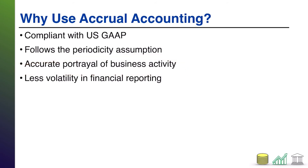Accrual accounting is also a more accurate portrayal of business activity. If you mowed the lawn in period one but don't get paid until period three, it doesn't make sense to say you earned revenue in period three — that's when the cash came in, but that's not when you actually conducted the business activity. So accrual accounting better portrays the actual business activity that takes place. Additionally, there's a lot less volatility. In a cash system, you spend cash for gas at one point, maintenance at another, employees at another, and you don't even know when the customer's going to pay — so cash flows and revenue go up and down constantly. Under accrual accounting, because you match revenues and expenses, they net against each other and show a steady flow of profitability over time rather than spikes up and down.